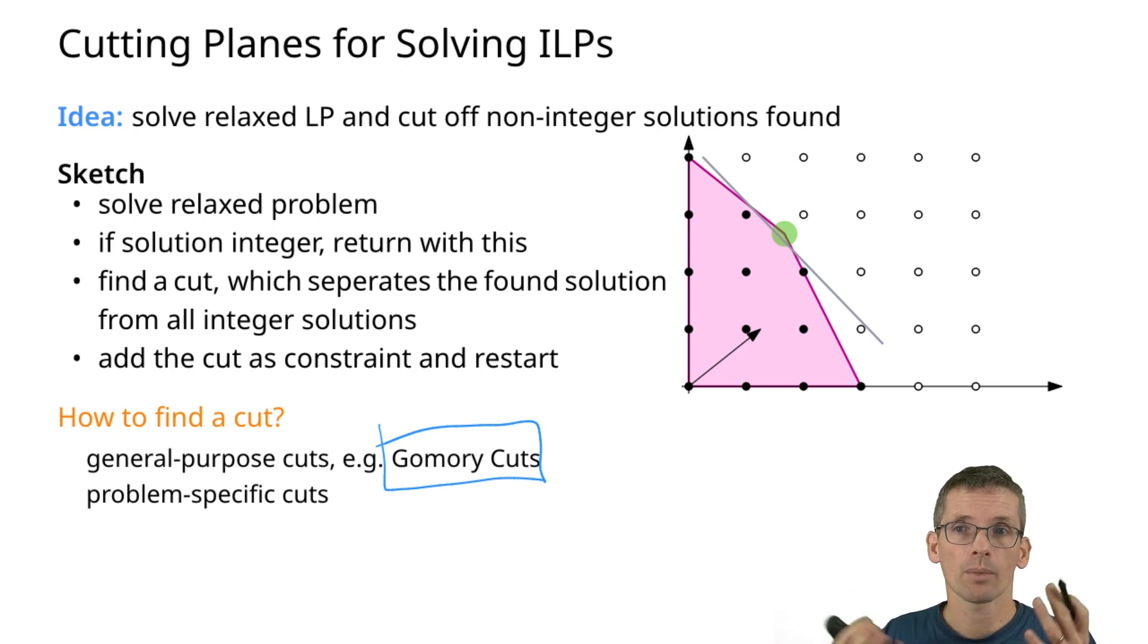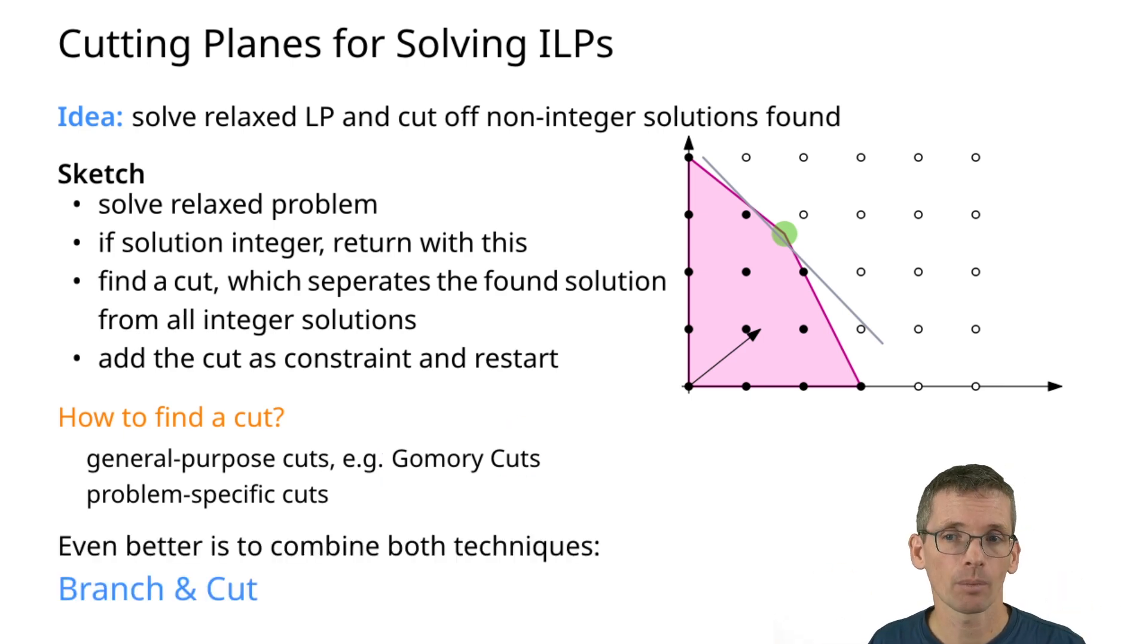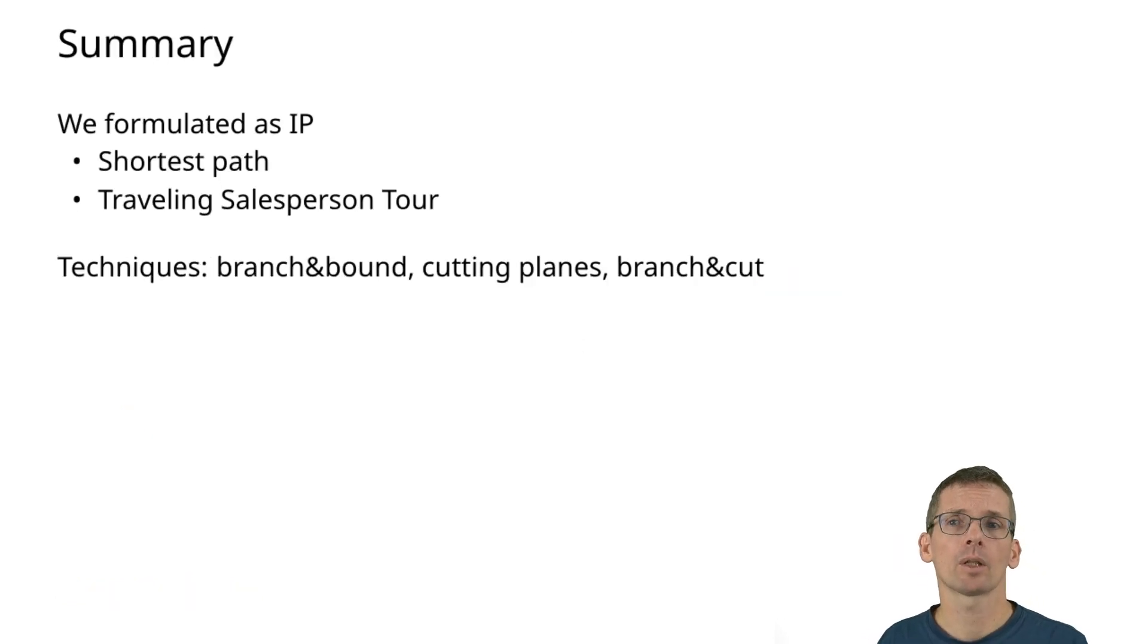What is commonly used is branch and bound or cutting planes, or the combination of both: branch and cut. So what we've seen is ILPs and LP formulations for shortest path and the traveling salesperson problem, and a brief overview of techniques for solving ILPs.